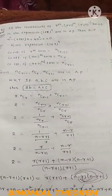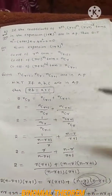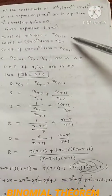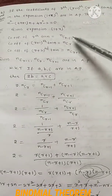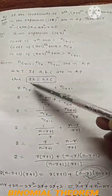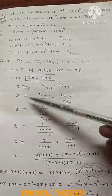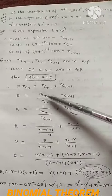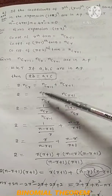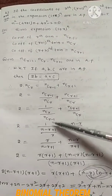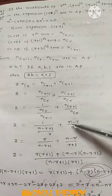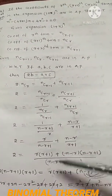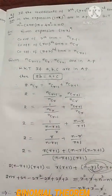This question is very simple. The key steps are: write the coefficients, set up the AP condition, divide by the middle term, apply the nCr ratio formula, apply LCM, simplify, and the result follows as a star three-mark solution.